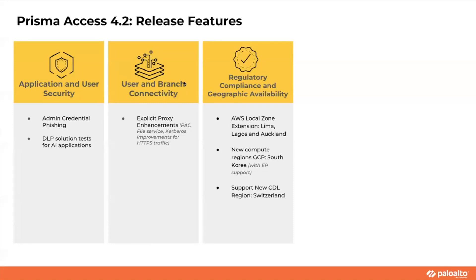Coming to the second pillar, there's user and branch connectivity. We already have an explicit proxy solution, and in this release we came out with two updates: we introduced a PAC file service, and for customers using Kerberos as an auth method, there are improvements for HTTPS traffic from a security standpoint. Lastly, in our continuous quest to keep expanding locations, on the third pillar we've added new AWS local zones in Lima, Lagos, and Auckland, a new GCP compute region in South Korea, and our CDL support region has been extended to Switzerland.